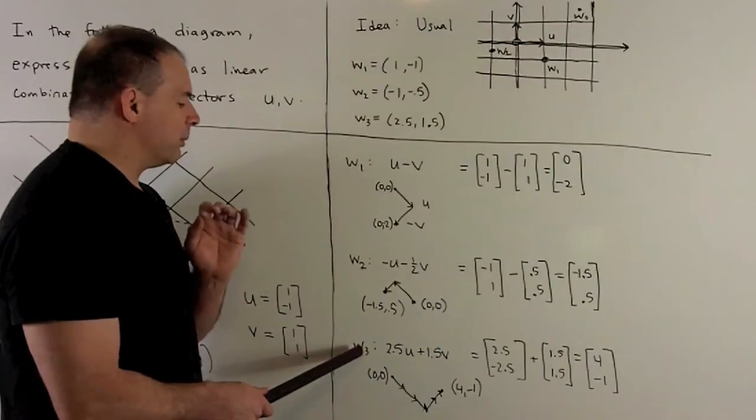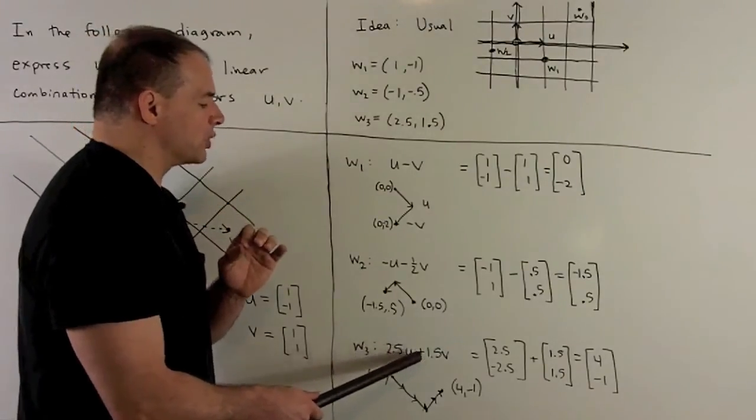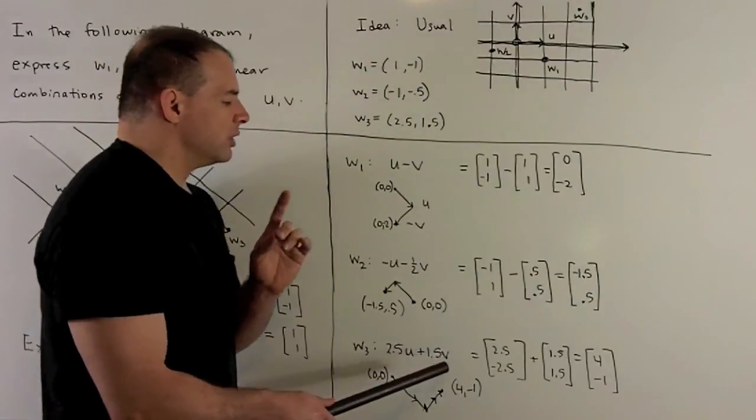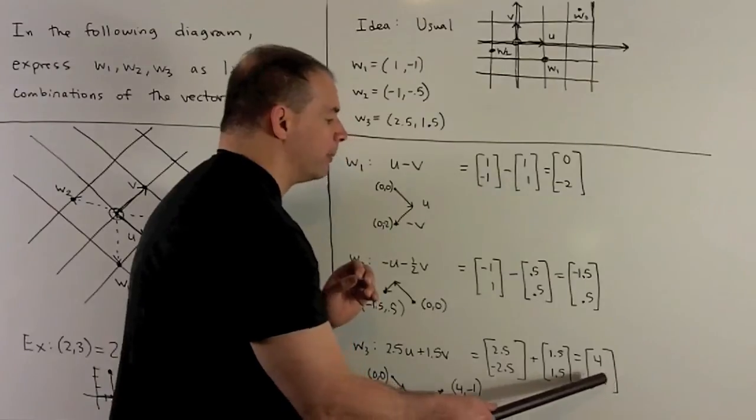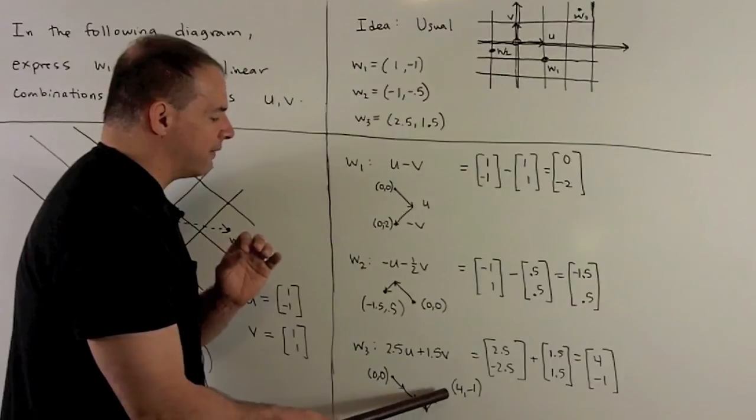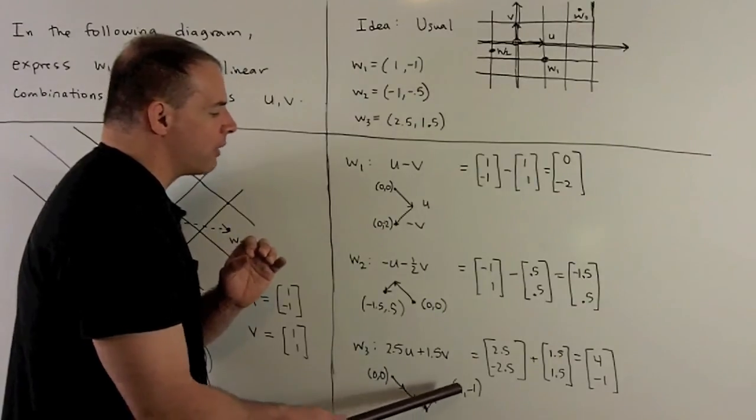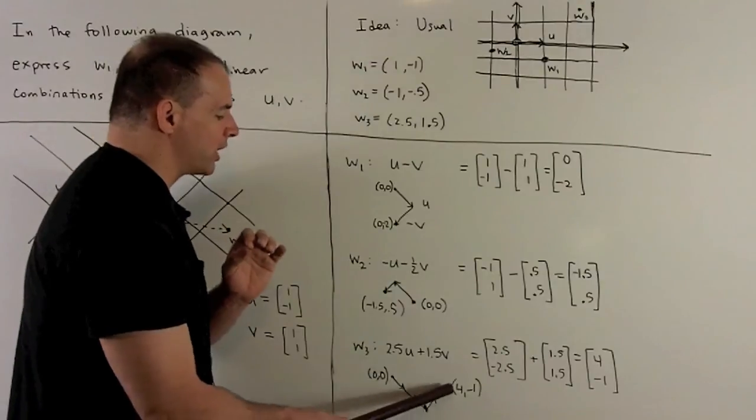Finally, same idea for w3. As a linear combination, we get 2.5u + 1.5v. So in terms of x and y, we get (4, -1). Then when we do our vector addition, we're going to go 2.5u and then 1.5v, which gets us to our (4, -1) relative to the origin. So that works out also.